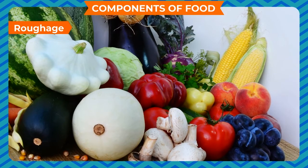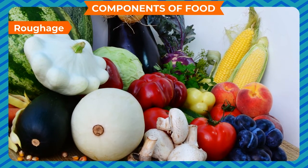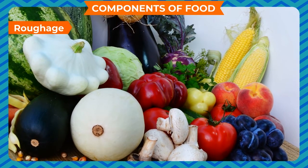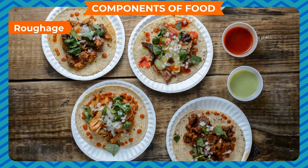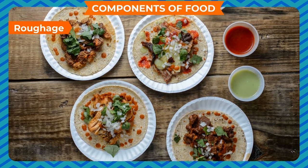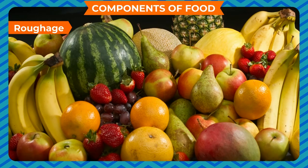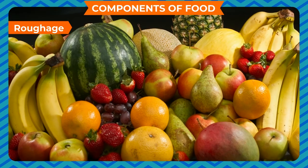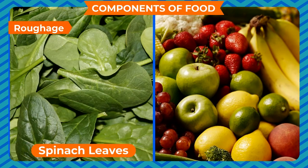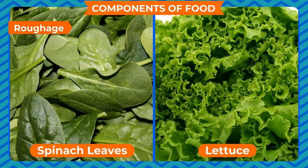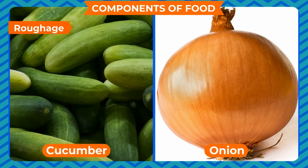Roughage may not provide us nutrients, but it is an essential component of our food as it contains plant fibers required for proper digestion of food and removal of undigested food. The main sources of roughage are fruits and vegetables like spinach leaves, lettuce, cabbage leaves, onion, cucumber, and tomatoes.